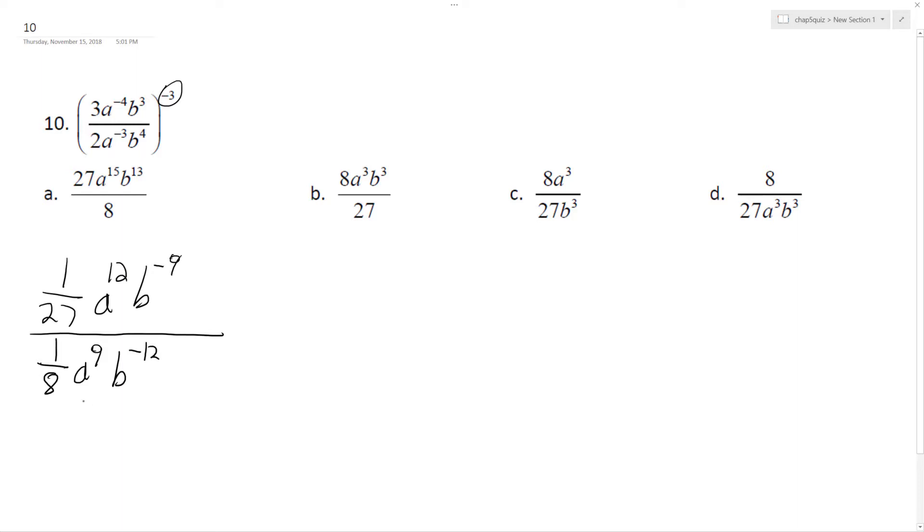So if we cancel things out, the same thing as 8, and then this just becomes the 3rd, A to the 3rd, and then B to the 12th, so this actually becomes positive 3, B to the 3rd. And then we have just 27 on the bottom.